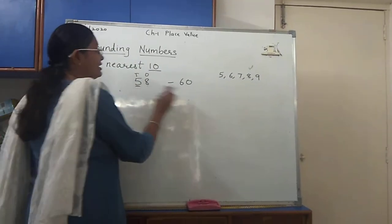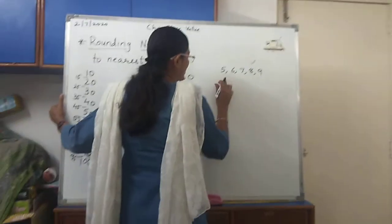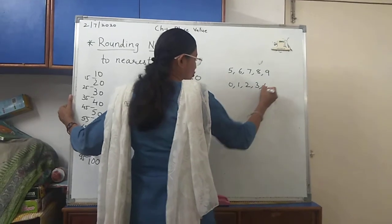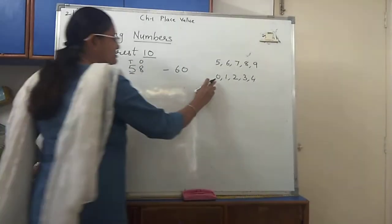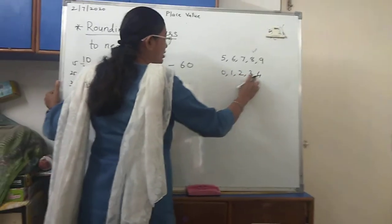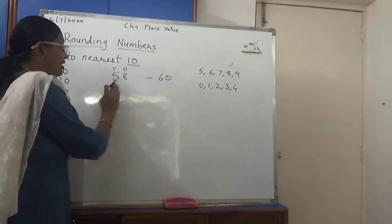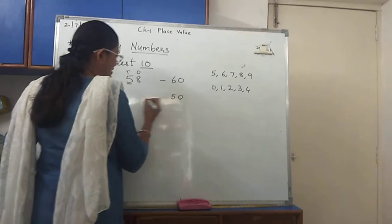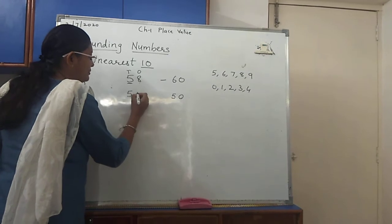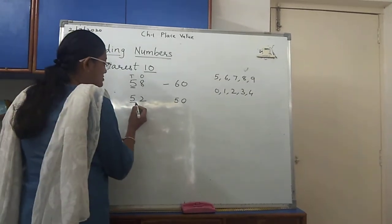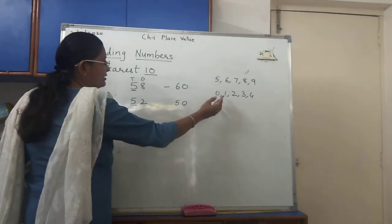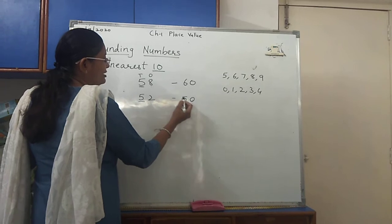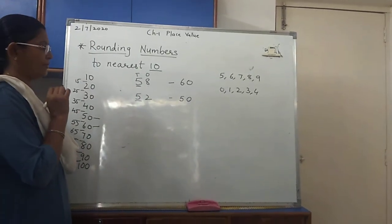But if the next number is smaller than 5, that is 0, 1, 2, 3, and 4 - if the second digit is 0, 1, 2, 3, or 4, anyone from this, then you don't have to do anything to 5. Just write 5 as it is and keep 0 back side. Let me give you an example that is 52. 5 is at 10s place and 2 is smaller than 5. So it is near to 50. You have to write 50. This is the other method to remember.